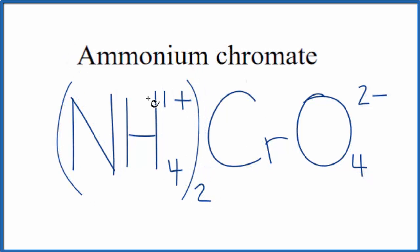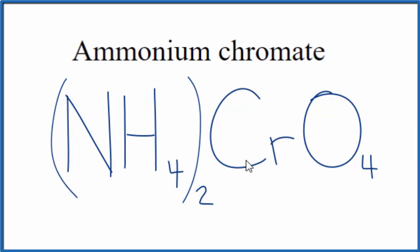Now we have 2 times the 1+ here. That's 2+, the chromate ion, that's 2-. That adds up to zero, net charge of zero. This is the formula for ammonium chromate: (NH4)2CrO4. This is Dr. B, and thanks for watching.